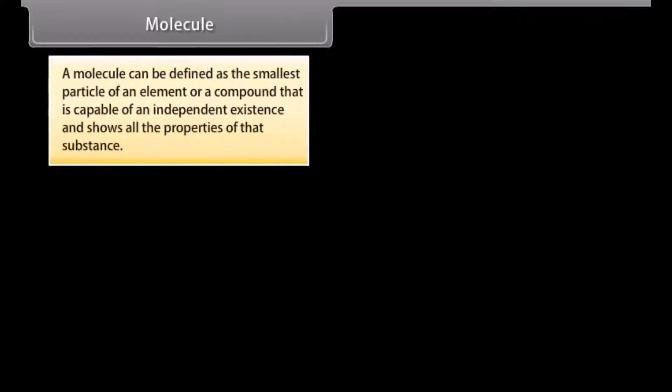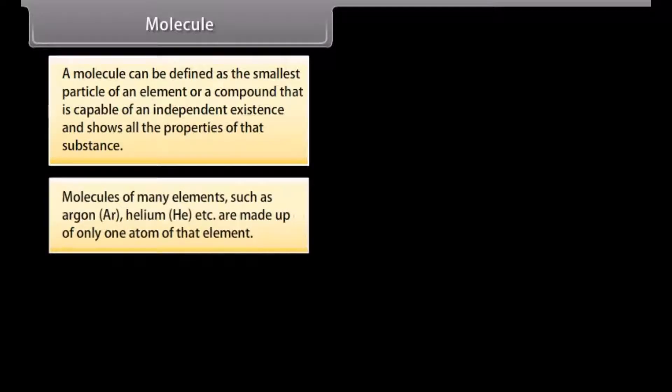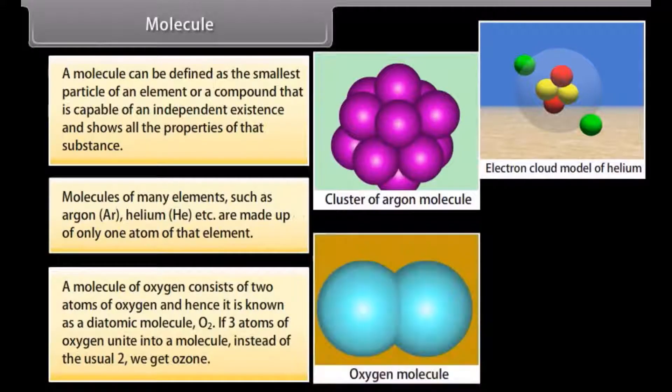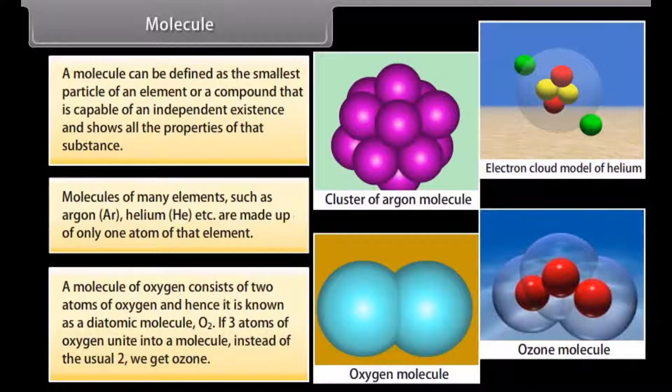Molecule. A molecule can be defined as the smallest particle of an element or a compound that is capable of an independent existence and shows all the properties of that substance. Molecules of many elements such as argon Ar, helium, etc. are made up of only one atom of that element. A molecule of oxygen consists of two atoms of oxygen and hence it is known as a diatomic molecule O2. If three atoms of oxygen unite into a molecule instead of the usual two, we get ozone.